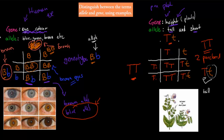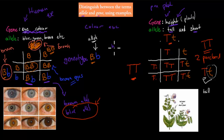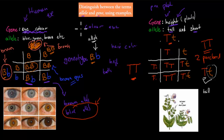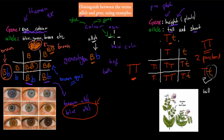To distinguish between the terms allele and gene using examples: the gene is generally what trait it codes for — for example, colour of the eye, or height of the plant. The allele is that there is not just one eye colour — there is blue, there is green, there is brown, etc.